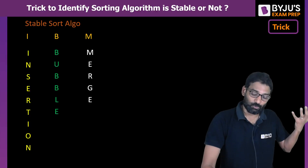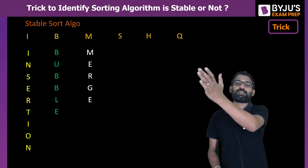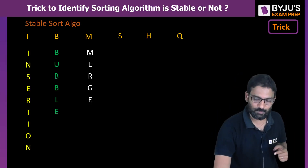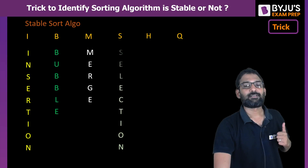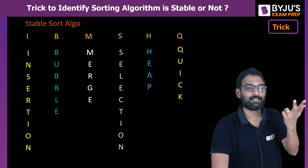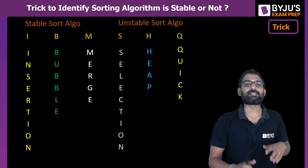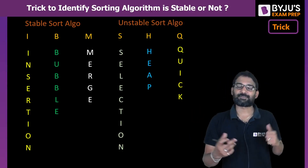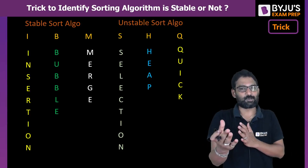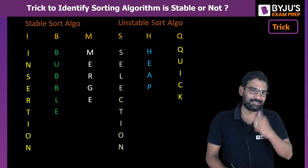And to remember the unstable sorting algorithms, remember the code SHQ. S is for selection sort, H is for heap sort, and Q is for quick sort — so selection sort, heap sort, and quick sort are unstable sorting algorithms. The trick is simple: IBM for stable sorting, SHQ for unstable sorting. Now you can remember easily!